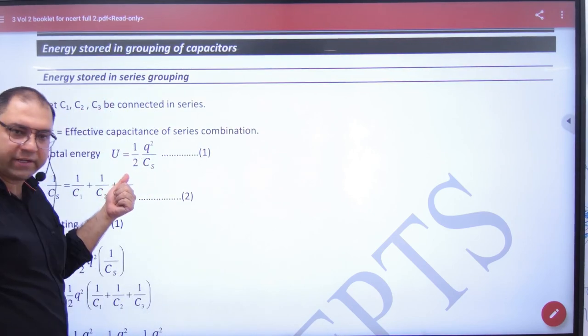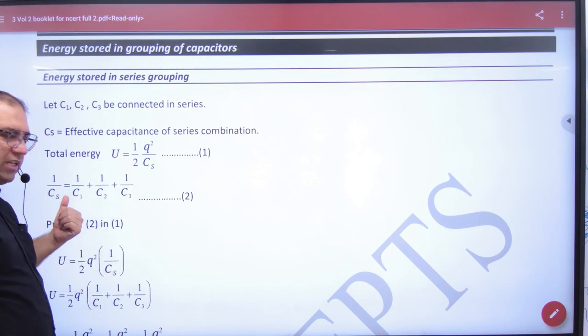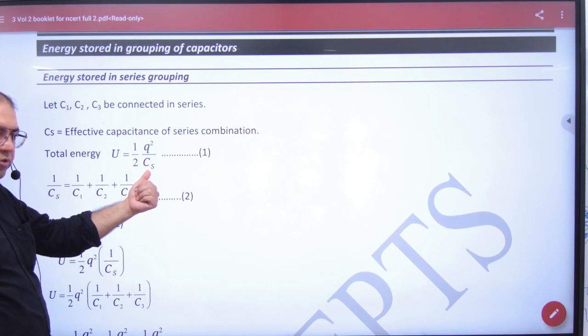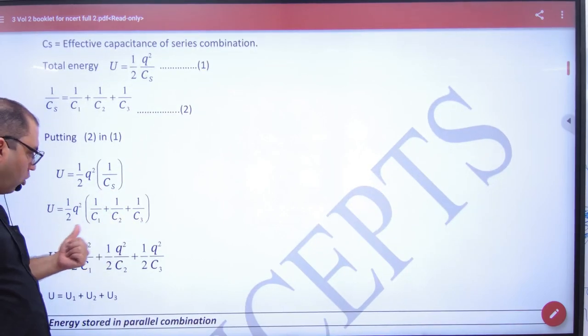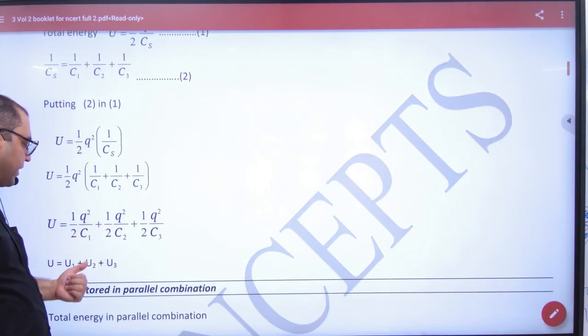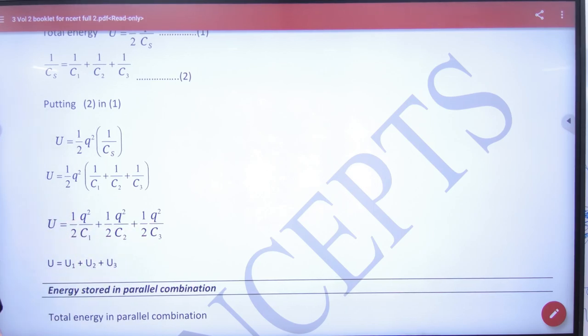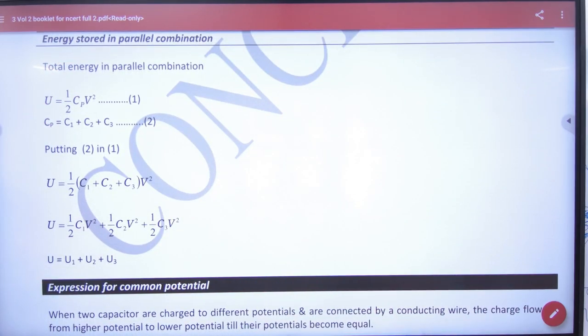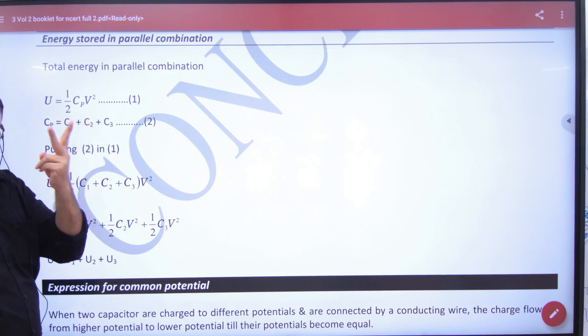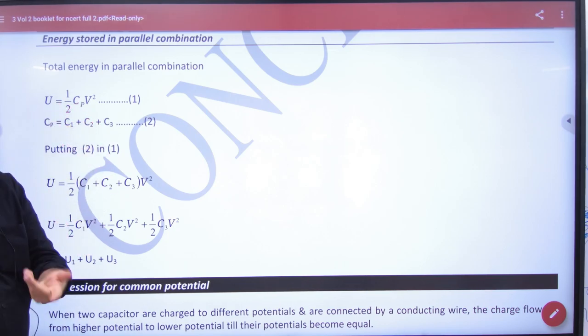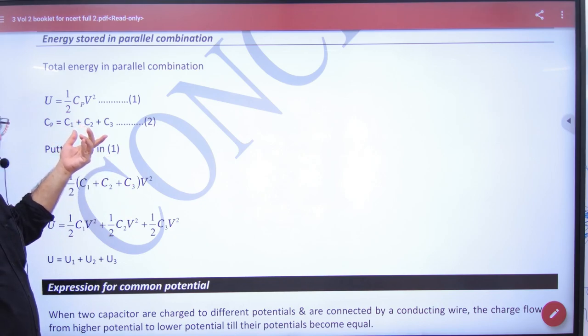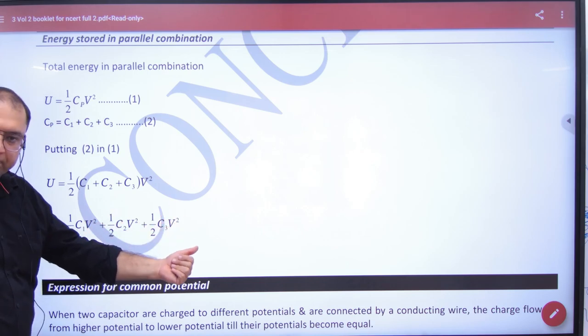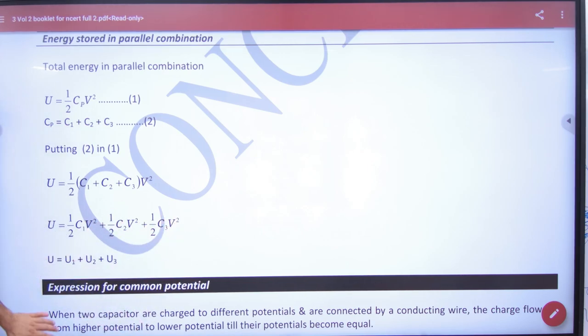So the capacitor is connected in series, half Q^2 by Cs. Now I know what is in series, what is 1 by Cs? 1 by C1, 1 by C2, 1 by C3. Open. This is energy stored in first capacitor, second capacitor and third capacitor. So this is your expression.